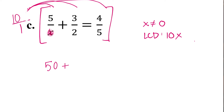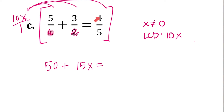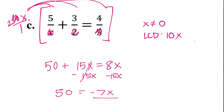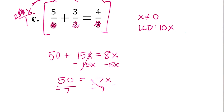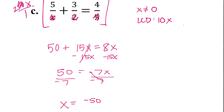Then when we do 10x times 3 over 2, the x won't cancel, but 2 can go into 10, so I can change this 10 over 2 to a 5. So then it's 5x times 3, which is 15x. And then on the other side of the equation, when we do 10x times 4 over 5, similarly, 5 can go into 10 twice, so then it's 2x times 4, which is 8x. So getting my x terms together by subtracting, that's 50 equals negative 7x. Dividing by negative 7, my answer is negative 50 over 7. That was not one of the restrictions, so that is our answer.